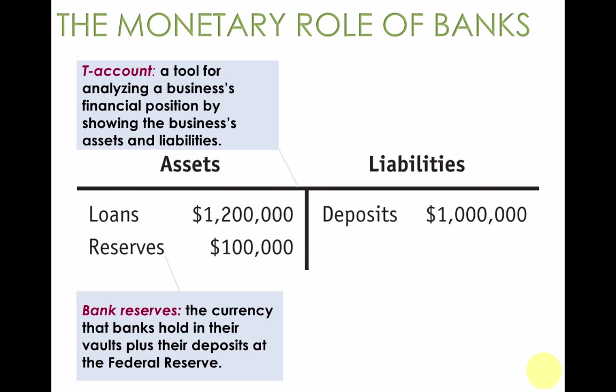Banks are incentivized to loan out as much as they can. However, they also need to have money on hand for when depositors come in and withdraw cash or write checks against their accounts. To lend some stability and put faith in the banking system, the Federal Reserve requires that banks hold back about 10% of their deposits as reserves.